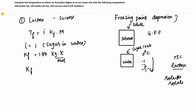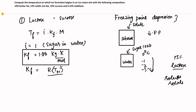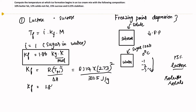The cryoscopic constant for water is 1.86 kg·K/mol. This is a standard constant for water. It is derived from: Kf equals the gas constant (R) multiplied by the normal freezing temperature of the pure solvent squared, divided by the latent heat of fusion. For water: 8.314 × (273 K)² ÷ 3.335 J/g gives Kf = 1.86 kg·K/mol.